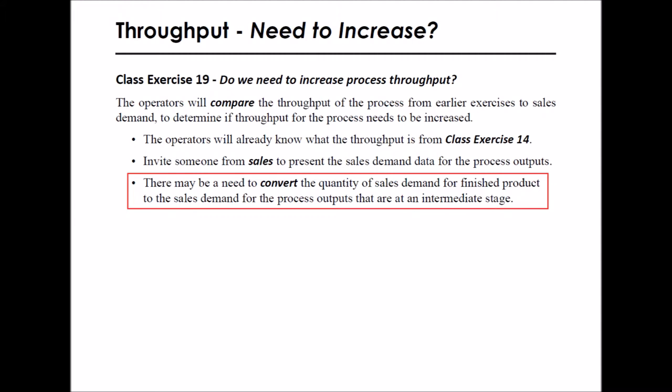For example, let's say the sales numbers are for chairs, but the work cell produces armrests. So, the sales numbers would need to be multiplied by 2 to determine the demand for armrests.